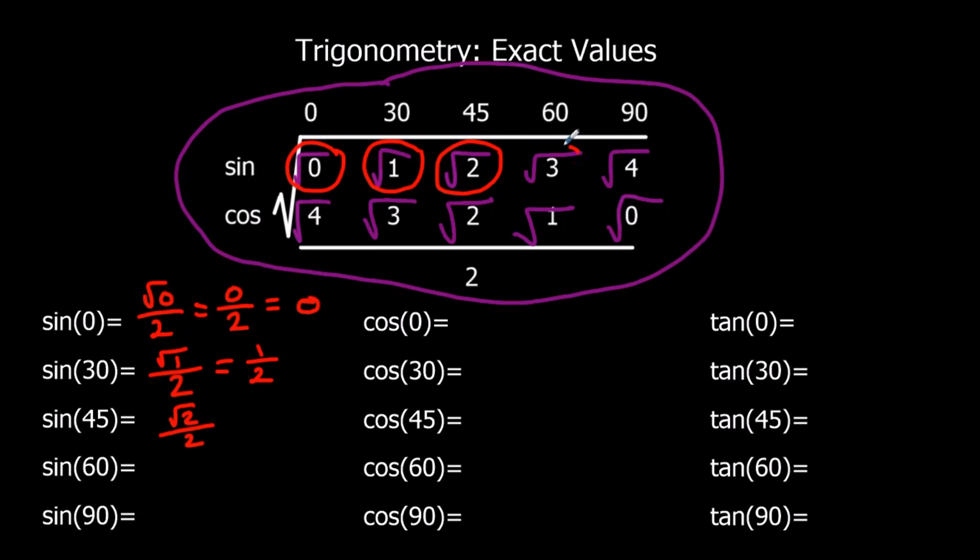Sin 60, I've got root 3 over 2. Again, I can't simplify that. I'm going to leave it as root 3 over 2.